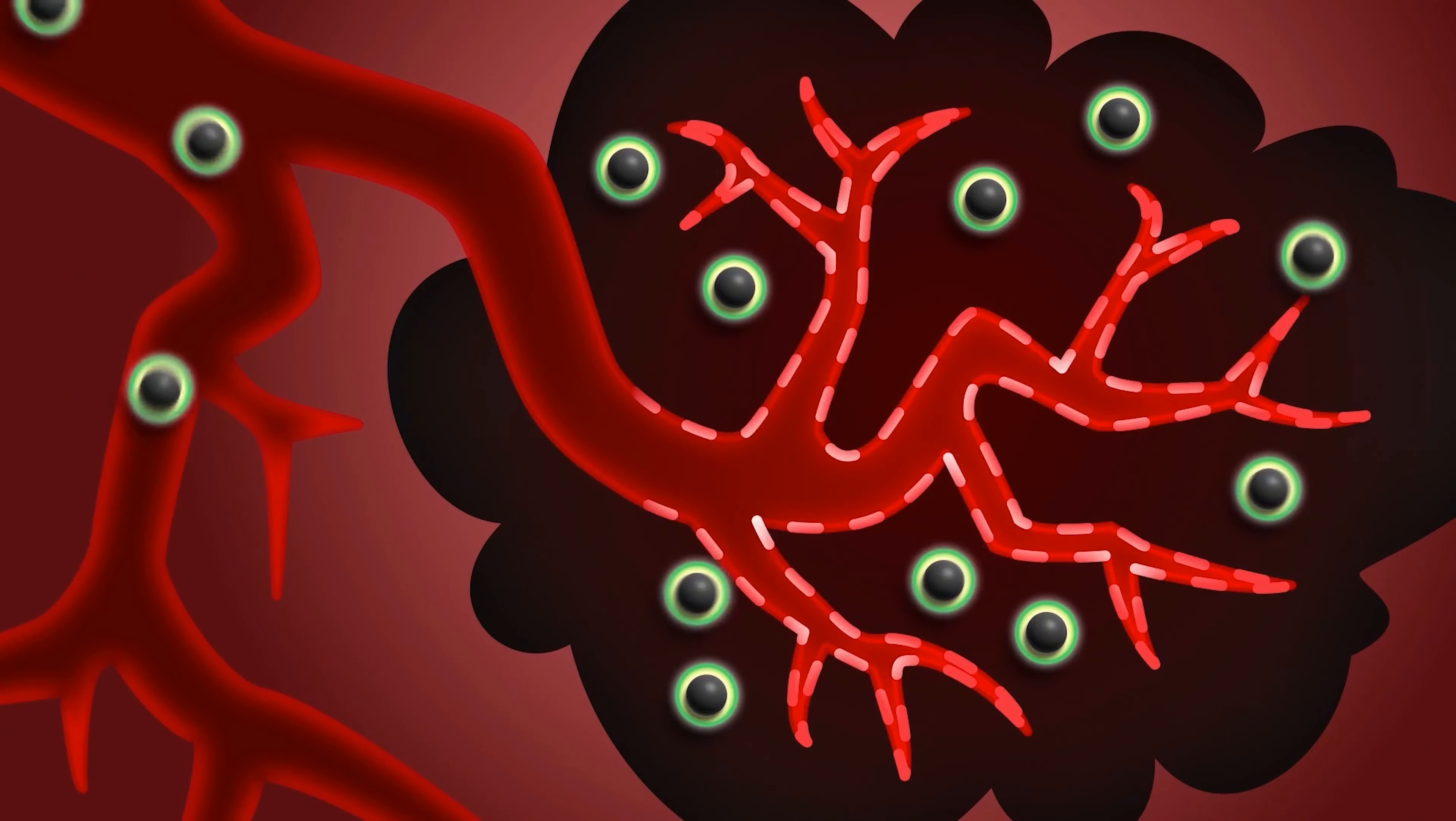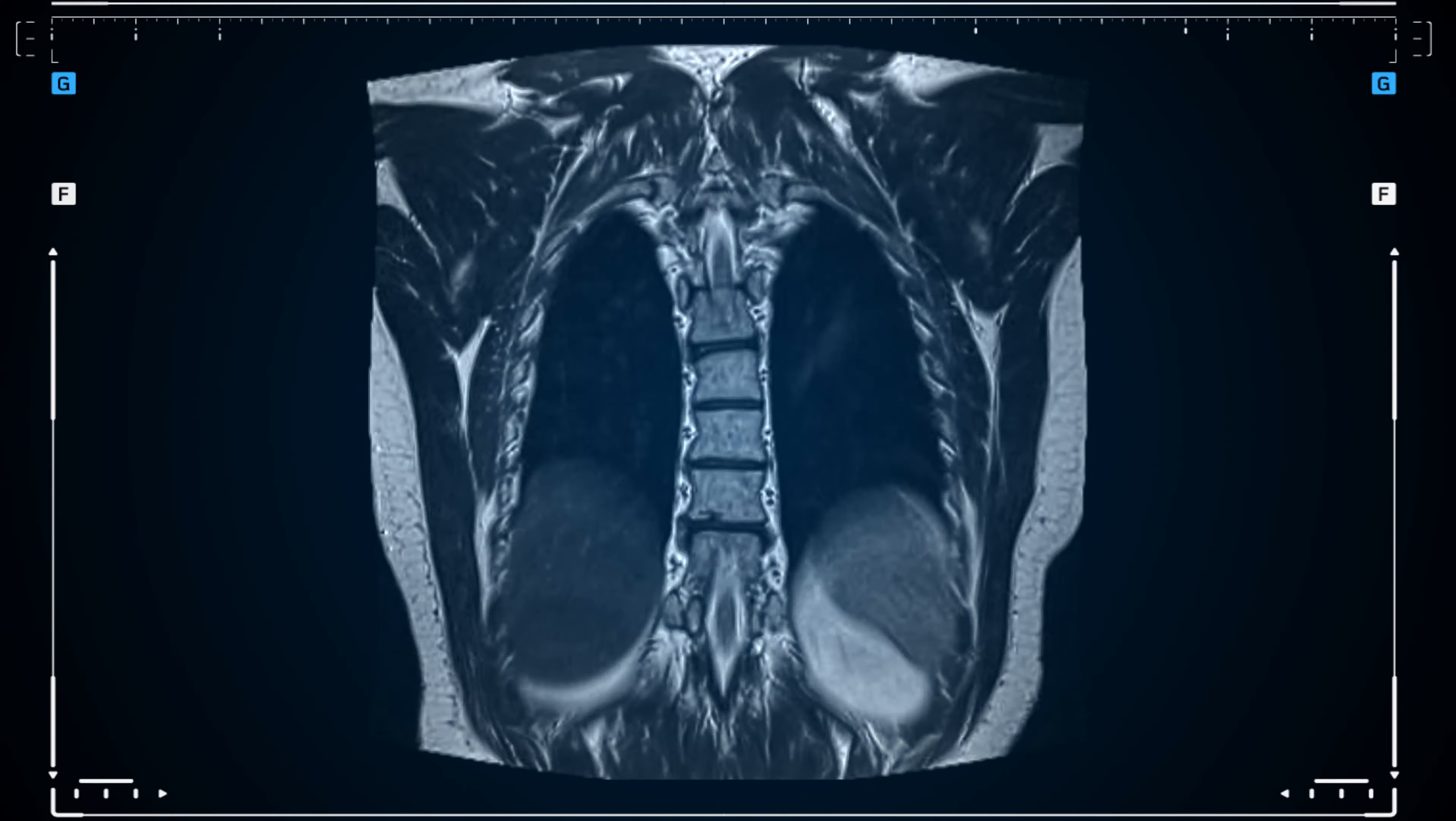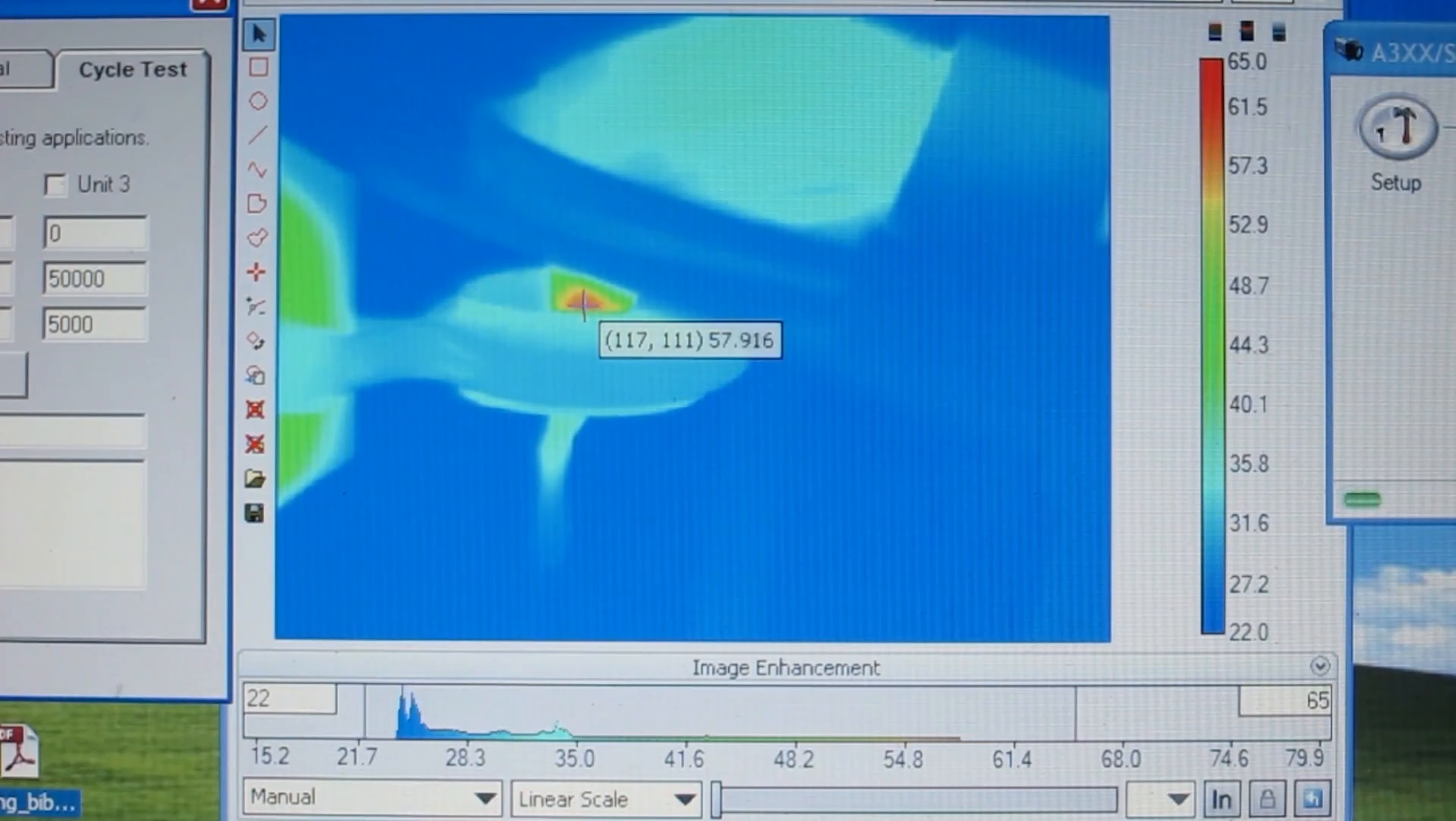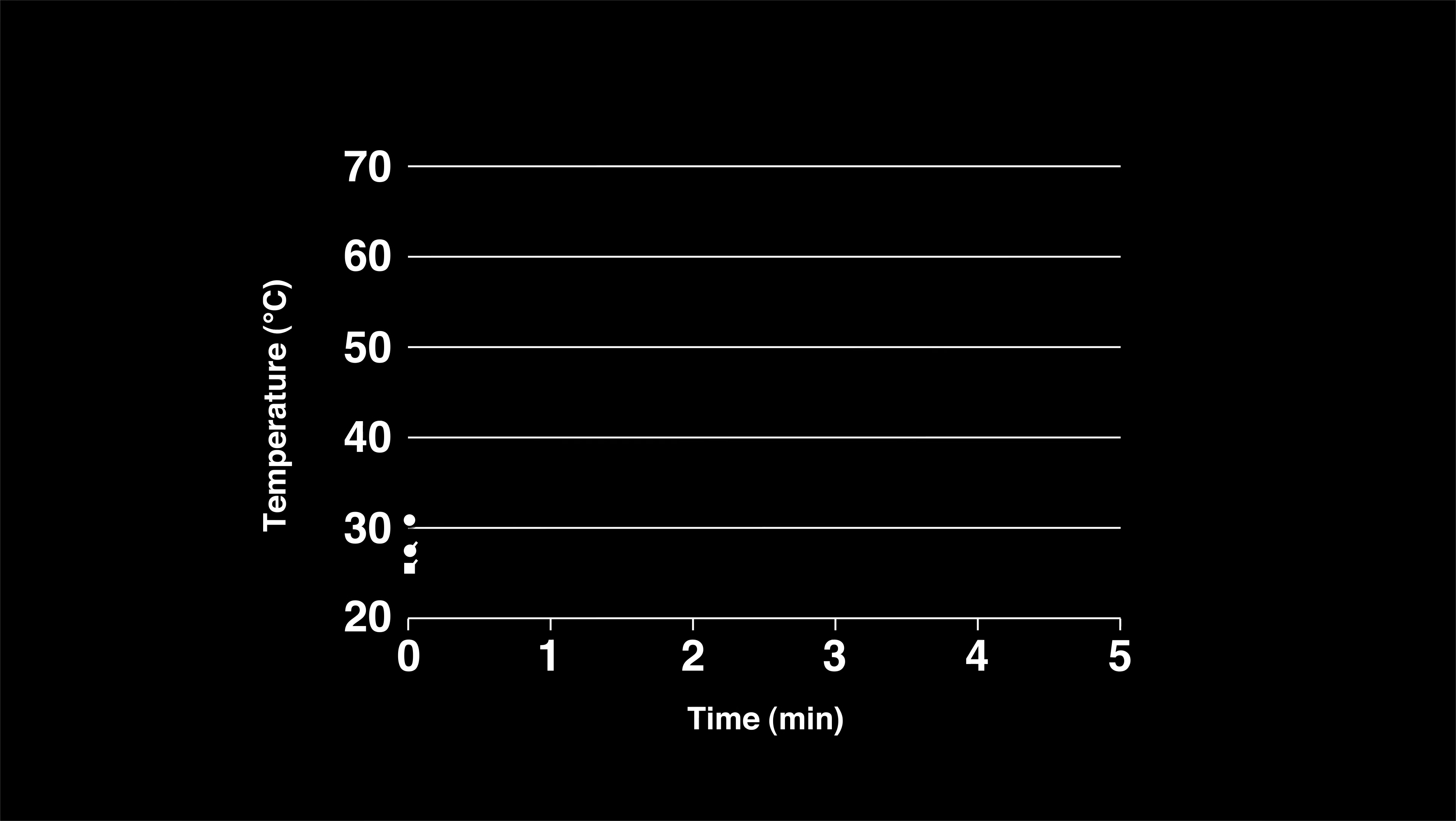Their master plan took advantage of a special property of cancer called enhanced permeability and retention, or EPR for short. This essentially refers to a weird ability that cancer tumors have to create lots of new blood vessels in and around itself. Since new blood vessels are more leaky than normal ones, the iron nanoparticles end up passing through the walls of these blood vessels more easily and accumulate in the tumor while staying out of healthy areas. After 24 hours, the tumors had 16 times the concentration of iron particles in comparison to the surrounding tissue.